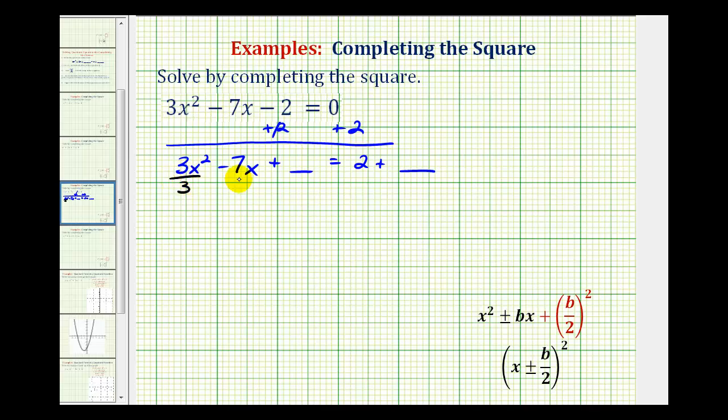We'll divide this by three, divide this by three, and divide this by three. So now we'll have x² - 7/3x plus a constant equals 2/3 plus a constant.